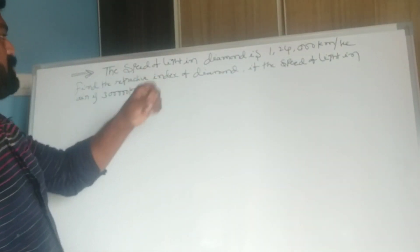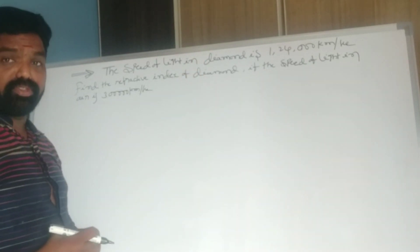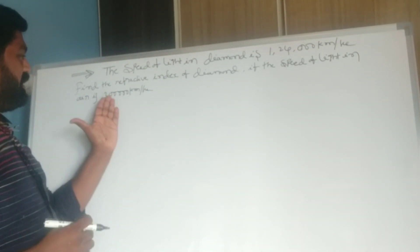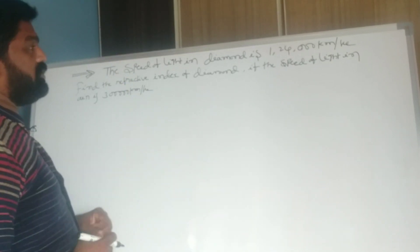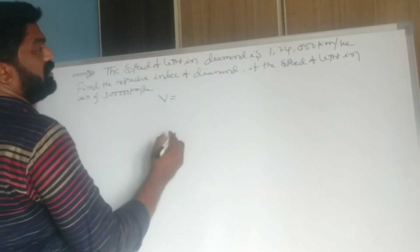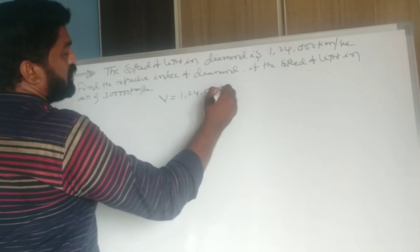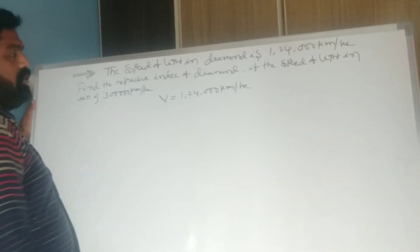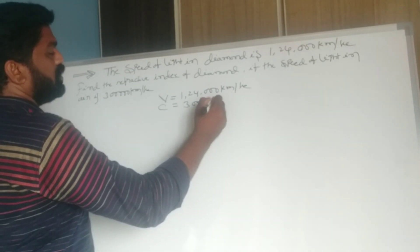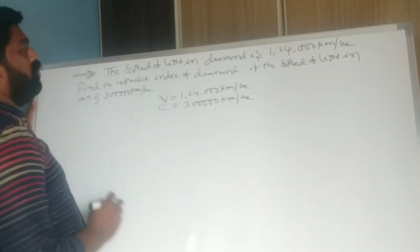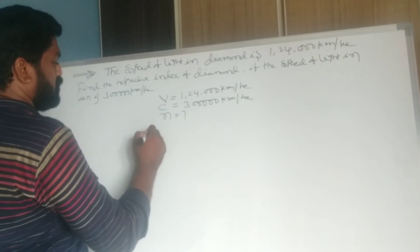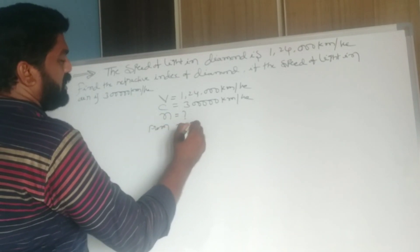Next problem: the speed of light in diamond is 1,24,000 kilometers per second. Find the refractive index of diamond if the speed of light in air is 3,00,000 kilometers per second. We want to find the refractive index of diamond using the formula n = C/V.